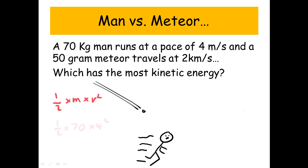So we've got half mv squared. For the man it's a half times 70 times 4 squared, which is 560 joules.